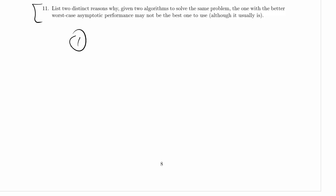So why might the algorithm that doesn't have the better worst-case asymptotic performance be the best one to use? Well, we've seen one example of that with deterministic select versus quick select, right?